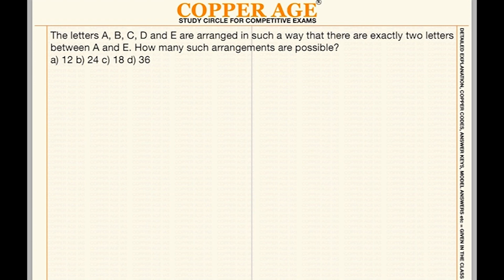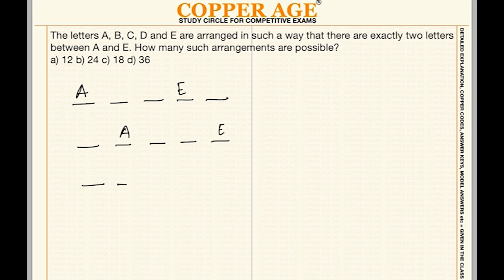We have two letters between A and E. Looking at five positions — one, two, three, four, five — I need exactly two letters between A and E, so some placements are not possible. We can see that several arrangements are not possible, but we check all combinations.